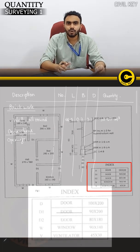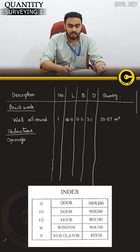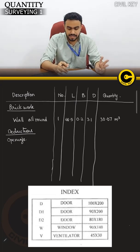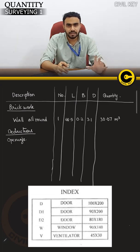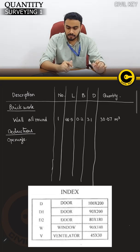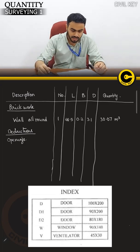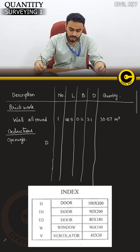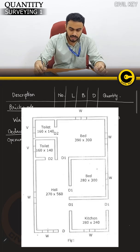There are 2 different types of openings: doors, windows, and ventilators. The door is marked as D. The openings include doors and windows, and we will deduct them from the total wall quantity.